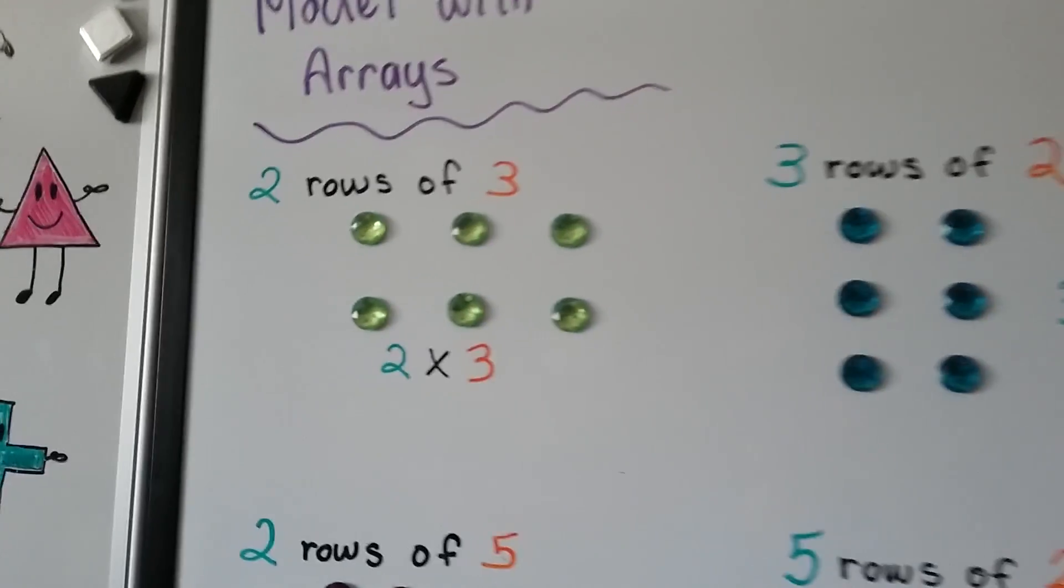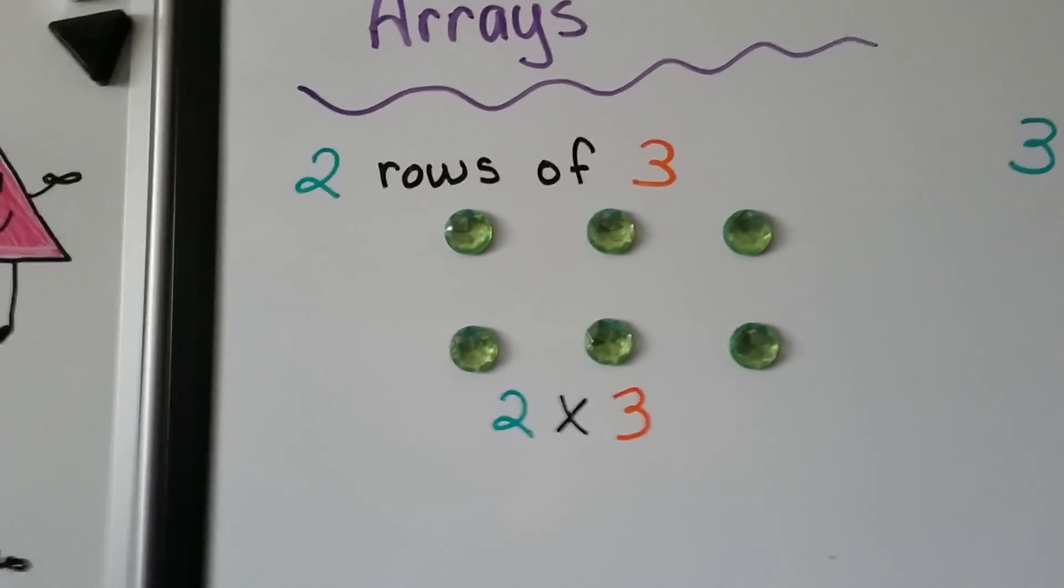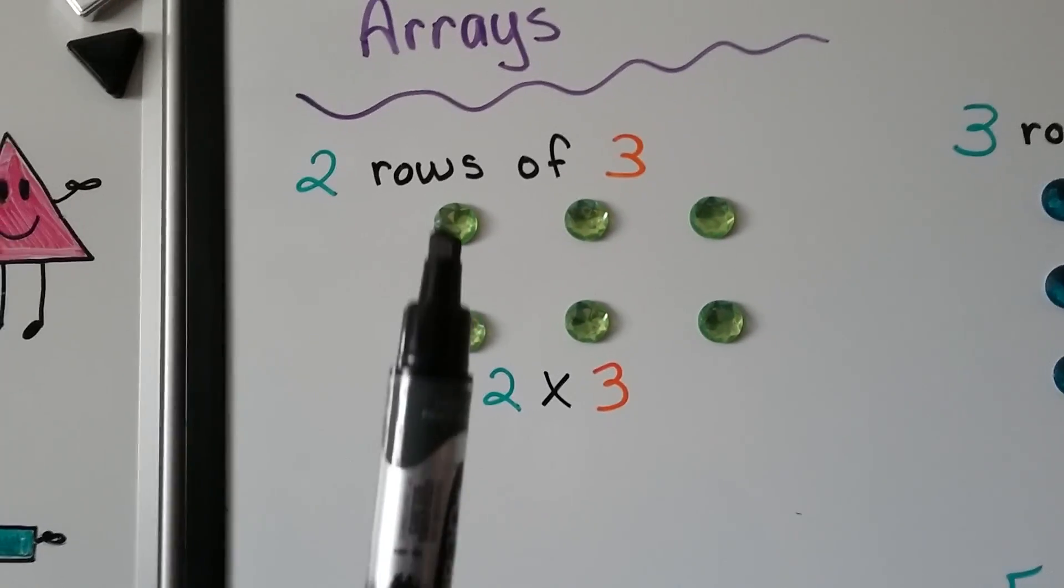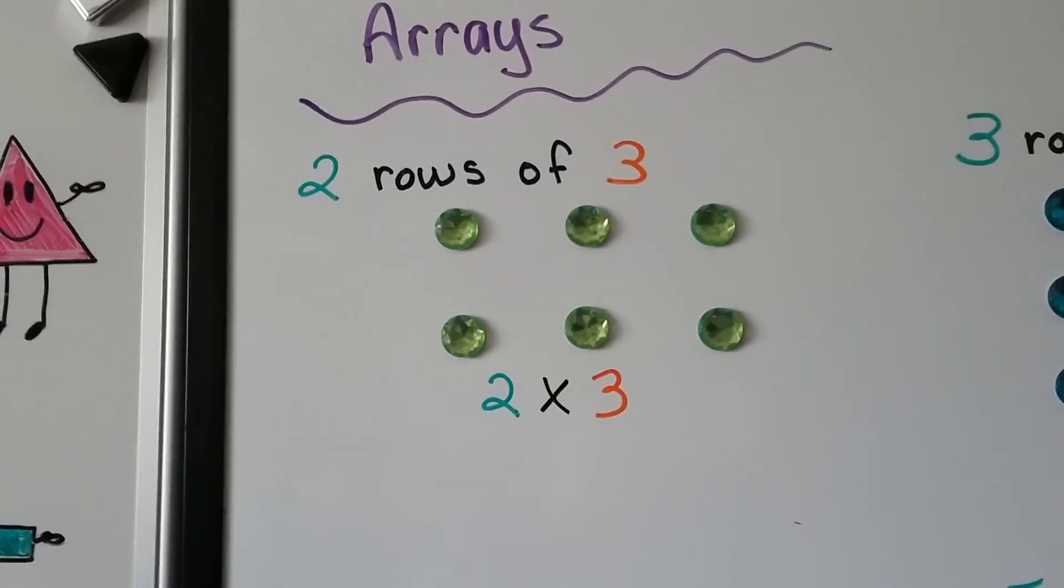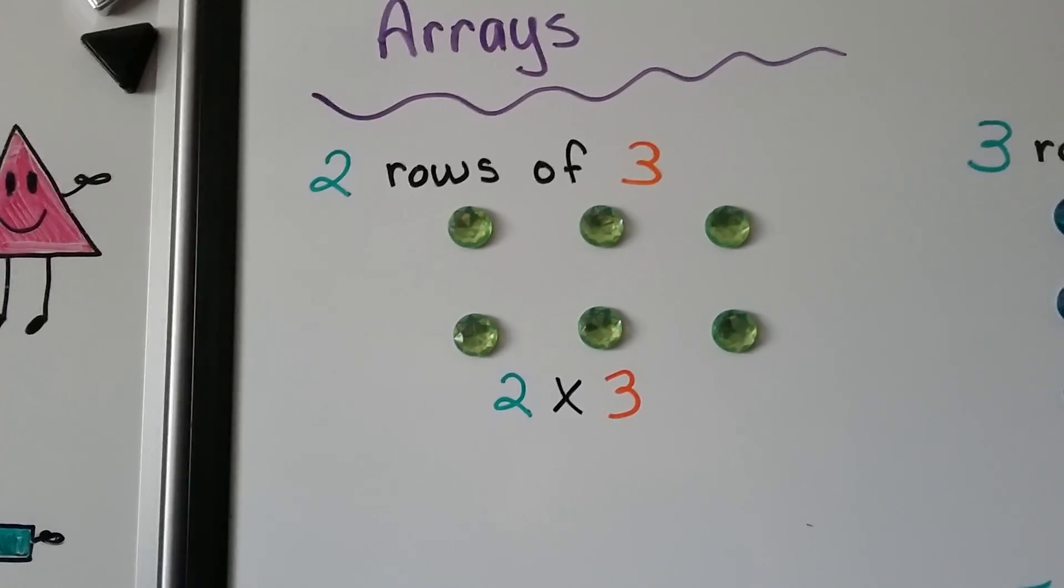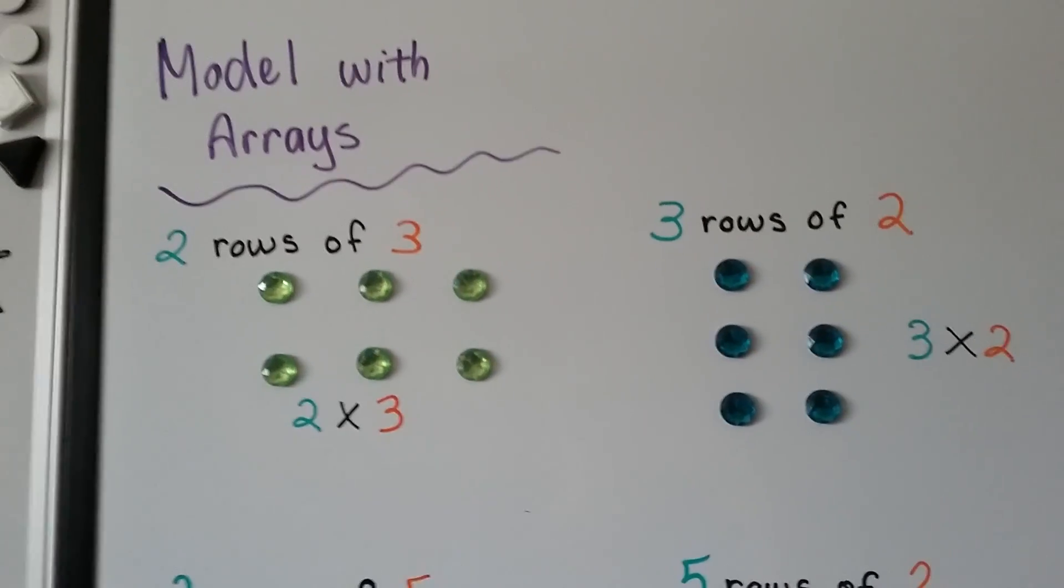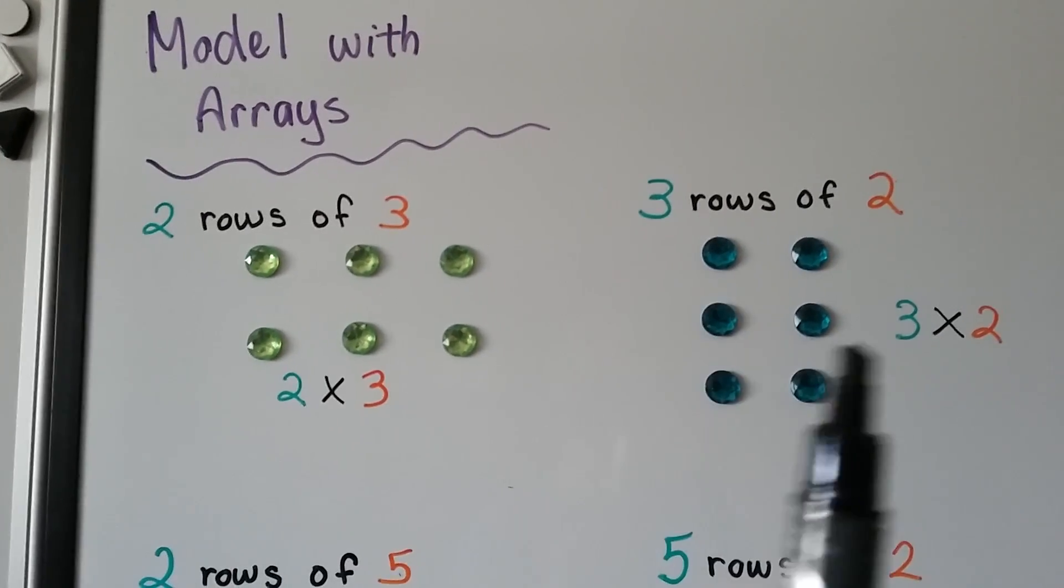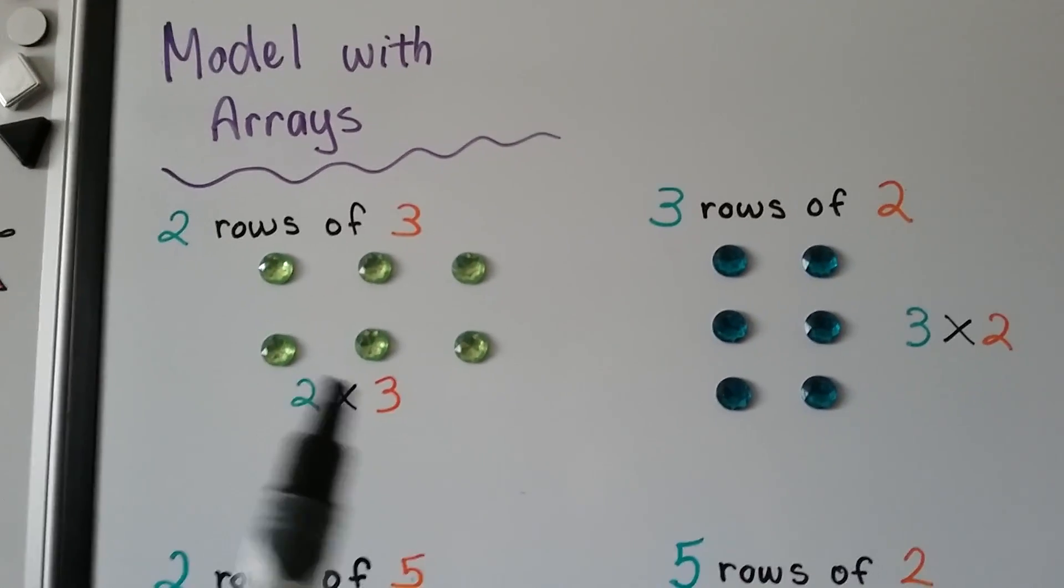So here we have two rows of 3. This would be 2 times 3. We have 1 row, 2 rows, and we have 1, 2, 3 columns, so we have 2 times 3. Now here we have 3 times 2. We have 3 rows and 2 columns. They both equal 6.